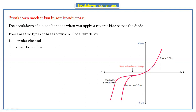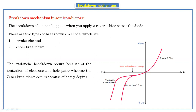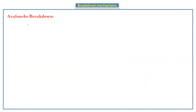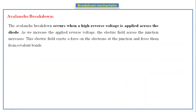Zener breakdown occurs at less than 5 volts, while avalanche breakdown occurs at greater than 5 volts. The avalanche breakdown occurs because of the ionization of electron-hole pairs, whereas the Zener breakdown occurs because of heavy doping.